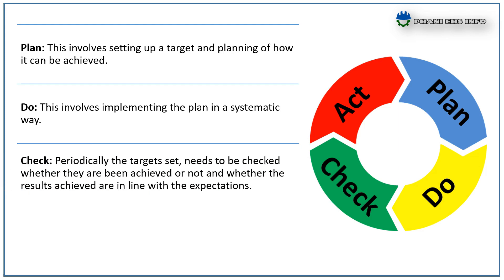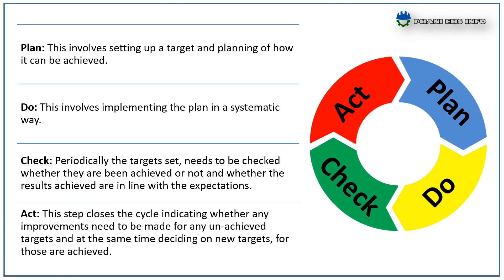The third letter, C, means Check. Periodically, the targets set need to be checked whether they have been achieved or not, and whether the results are achieved in line with expectations. And lastly, A means Act. This step closes the cycle, indicates whether any improvements need to be made, and at the same time decides on new targets for those already achieved.